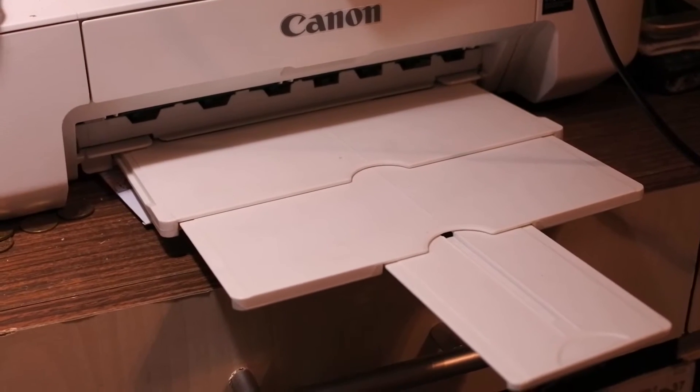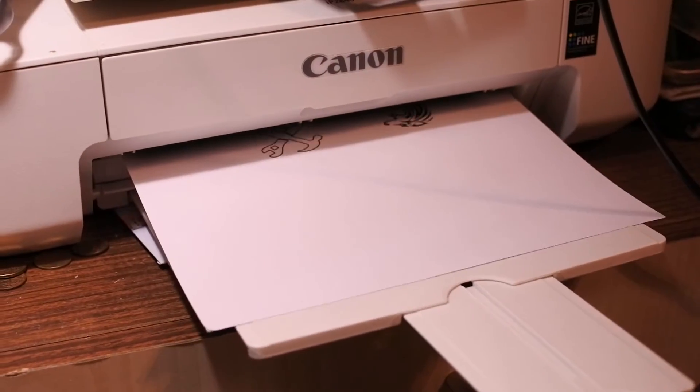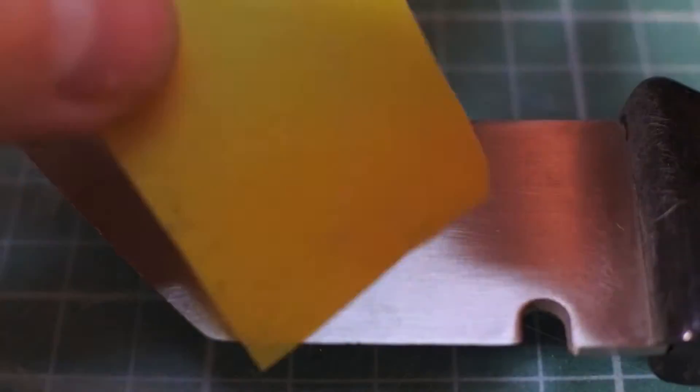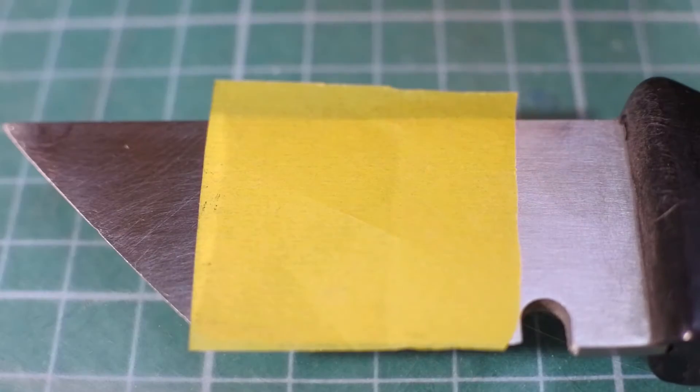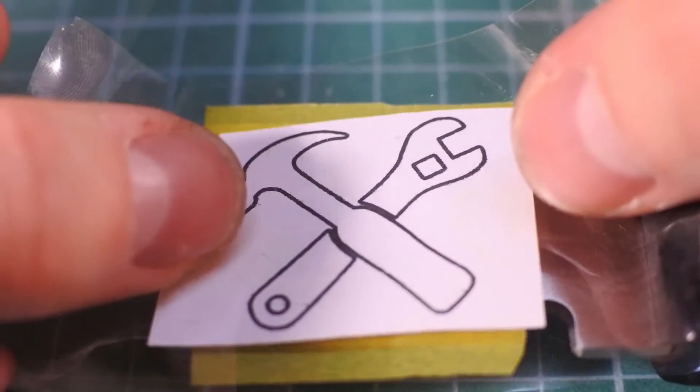At first you need a picture, scale it as you need and print it. If you want to etch some text, just write down your text on a paper. Place carbon paper on metal, then your drawing and then fix them all with tape.